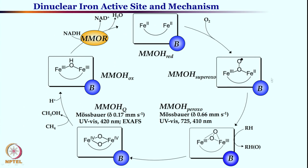Not much spectroscopic data are available for the superoxo intermediate, but the peroxo intermediate is suitably characterized — Mössbauer spectra are quite definitive of the iron(III) species, and UV-visible spectra show characteristic bands at 725 and 410 nm, indicating such a species exists. One can introduce substrate to this peroxo intermediate, and quick-freeze studies show it is capable of hydroxylating sp³ C–H bonds to the corresponding hydroxylated product.